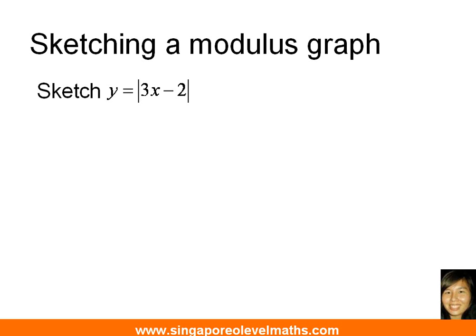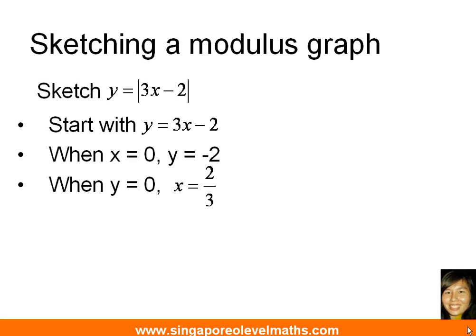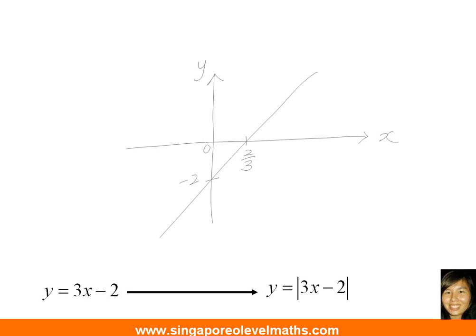If it is a sketch of a modulus graph, the first thing you want to do is simply remove the modulus sign. After you remove the modulus sign, this becomes a straight line, so we find two points: the y-intercept and the x-intercept. That is sufficient. With these two points, we are able to draw y equals to 3x minus 2, as shown in the next diagram. You can see that I have put down the x-intercept and the y-intercept.